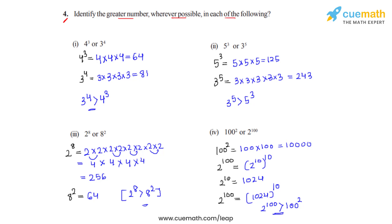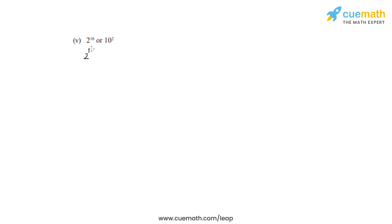So we have solved the first four bits. Going on to the fifth bit — we have 2 raised to 10. As we had already calculated, when 2 is multiplied 10 times to itself we get 1024. The next number is 10 raised to 2, that is 10 squared, which is nothing but 100. So from the two expansions we can clearly say that 2 raised to 10 is greater than 10 raised to 2, and this is how we solve this problem.